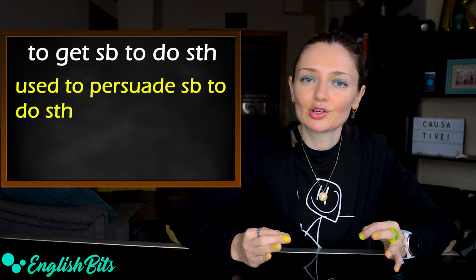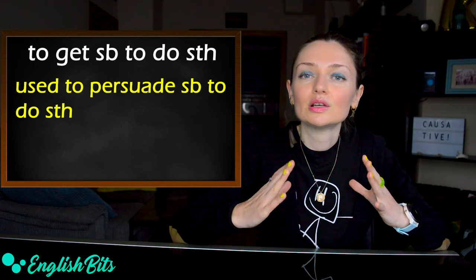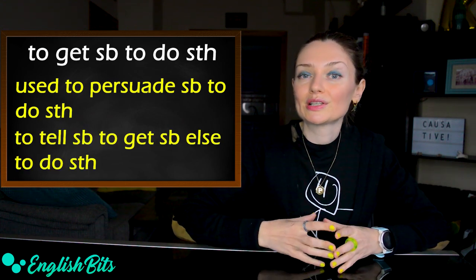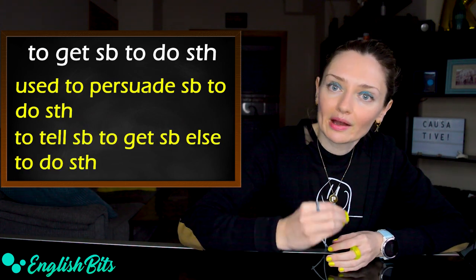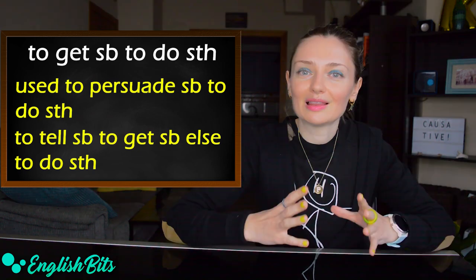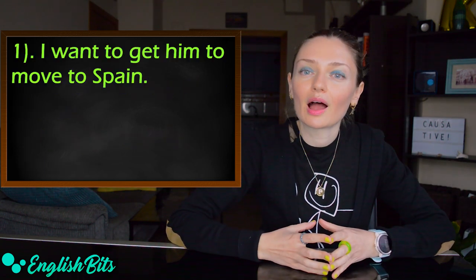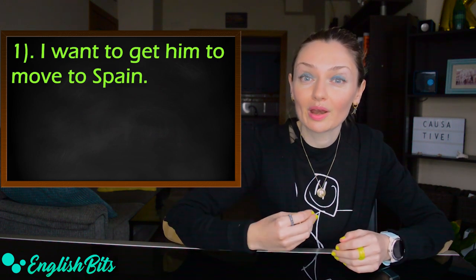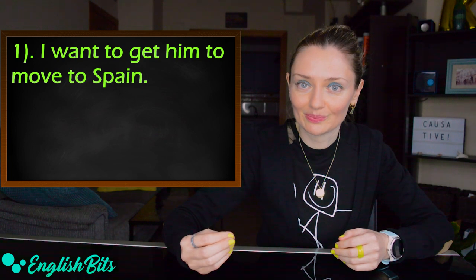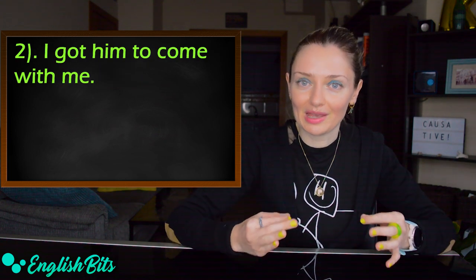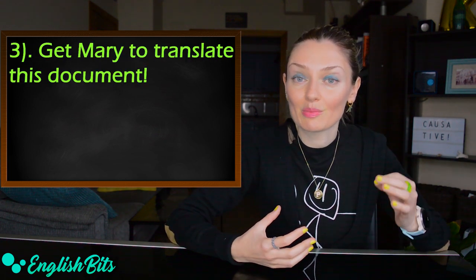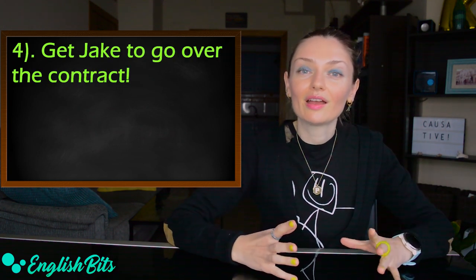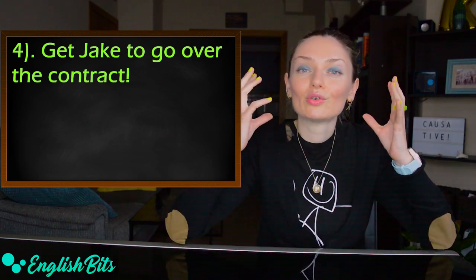We use this structure when we persuade someone to do something. And the structure is very common in the workplace, when we want to tell someone to get someone else to do something. And now let's look at some examples. The first one: I want to get him to move to Spain, which means I want to persuade him to move to Spain. Number two: I got him to come with me. Number three: Get Mary to translate this document. And the last example here: Get Jake to go over the contract.